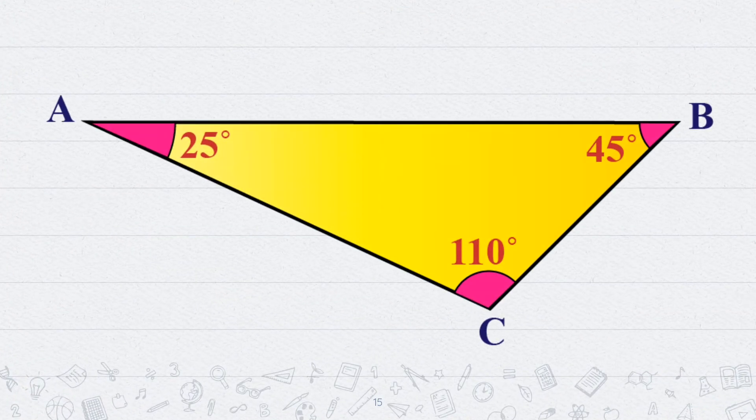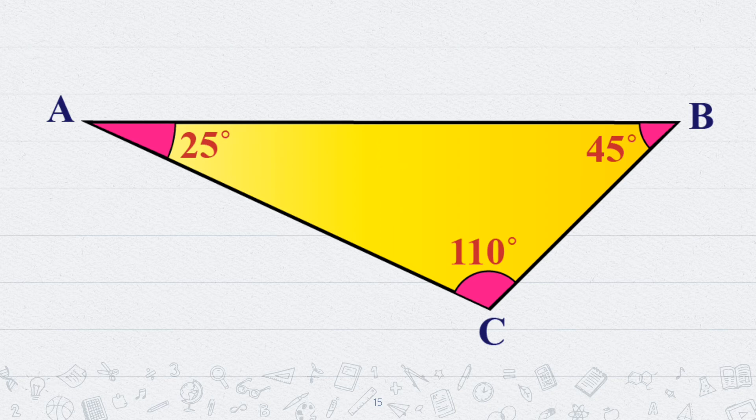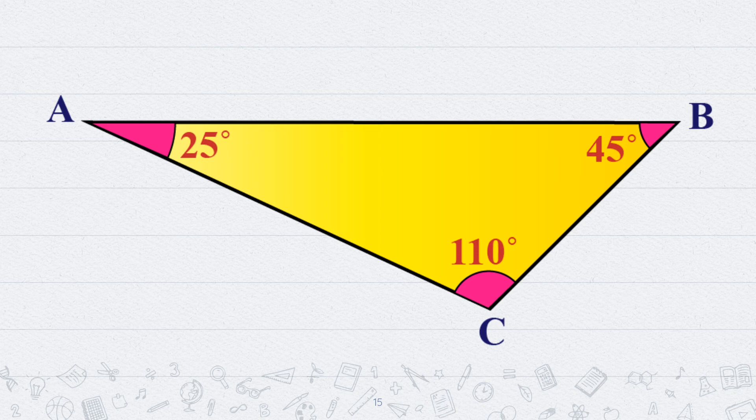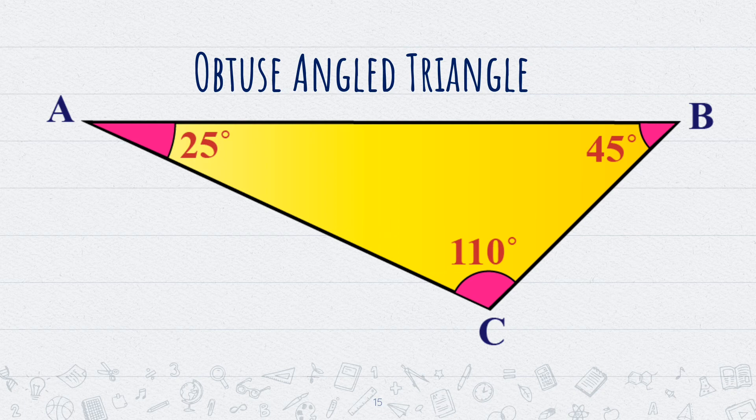This is a triangle that has two angles, but one angle is larger than 90 degrees. It is of 110 degrees. An angle that is larger than 90 degrees is called an obtuse angle. So, this triangle is an obtuse angled triangle.